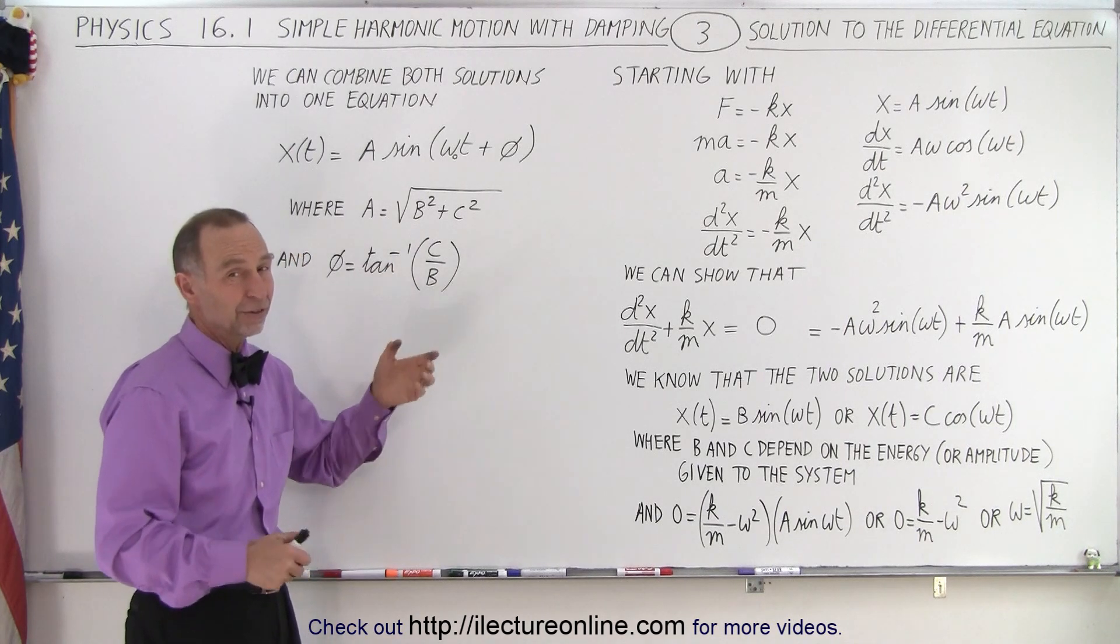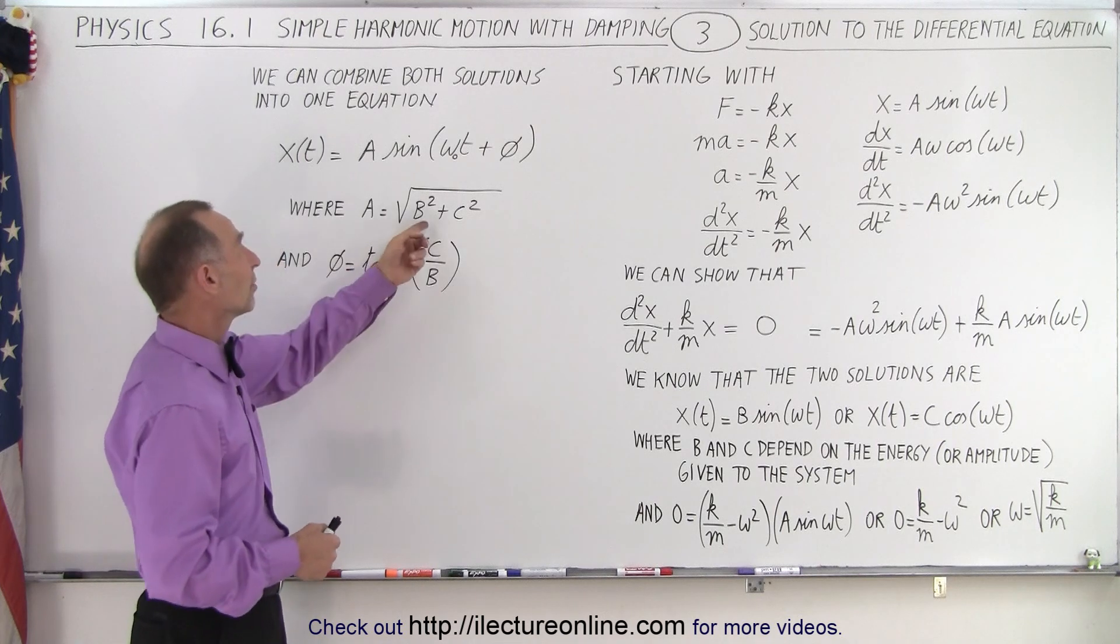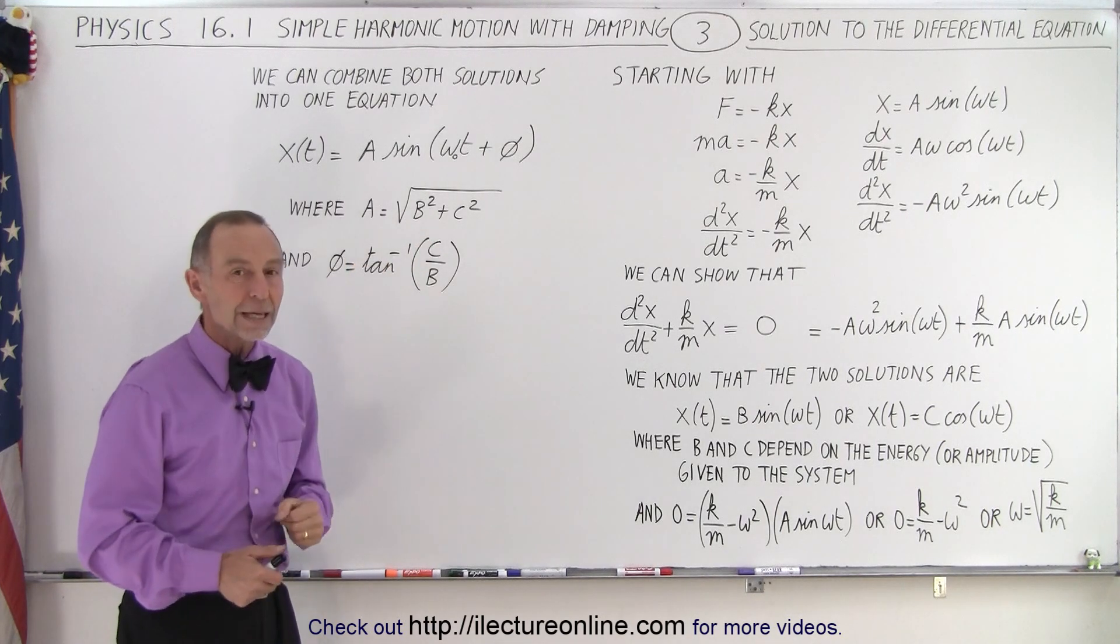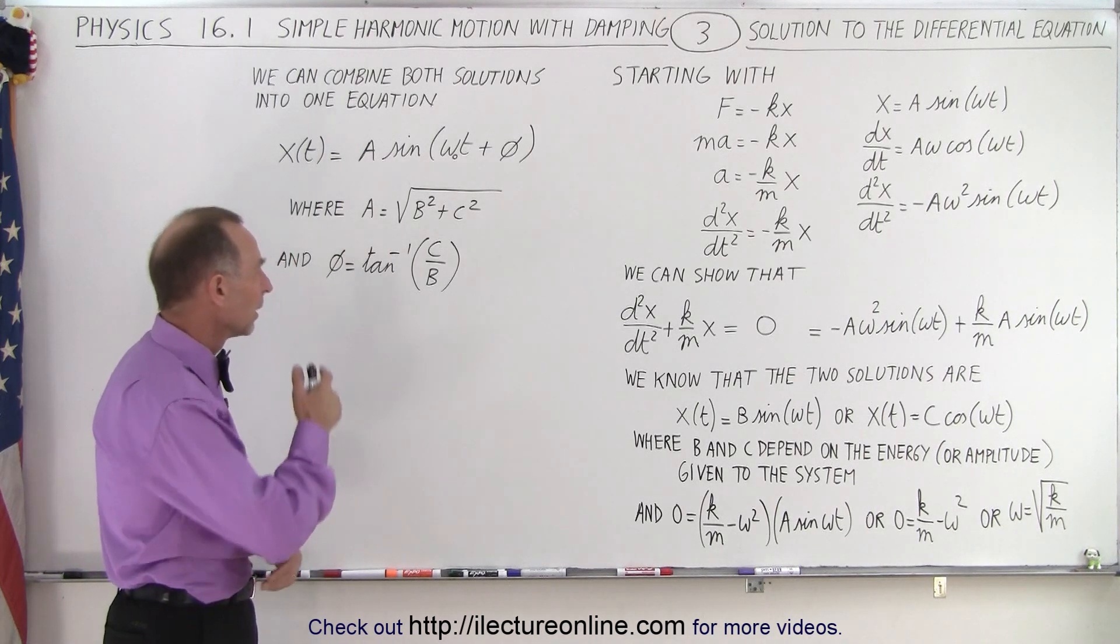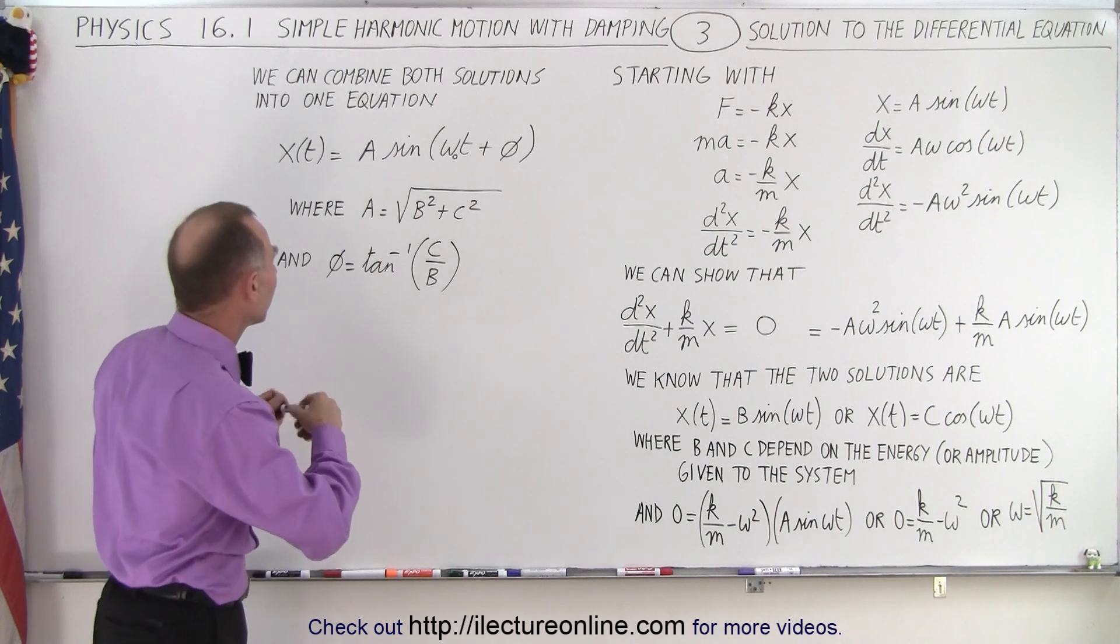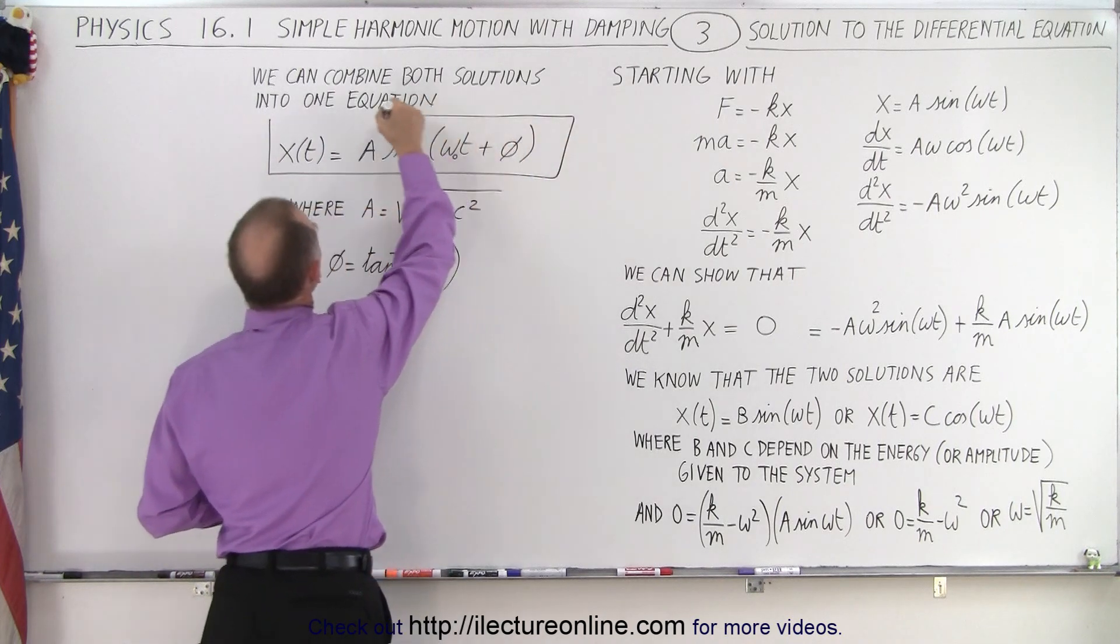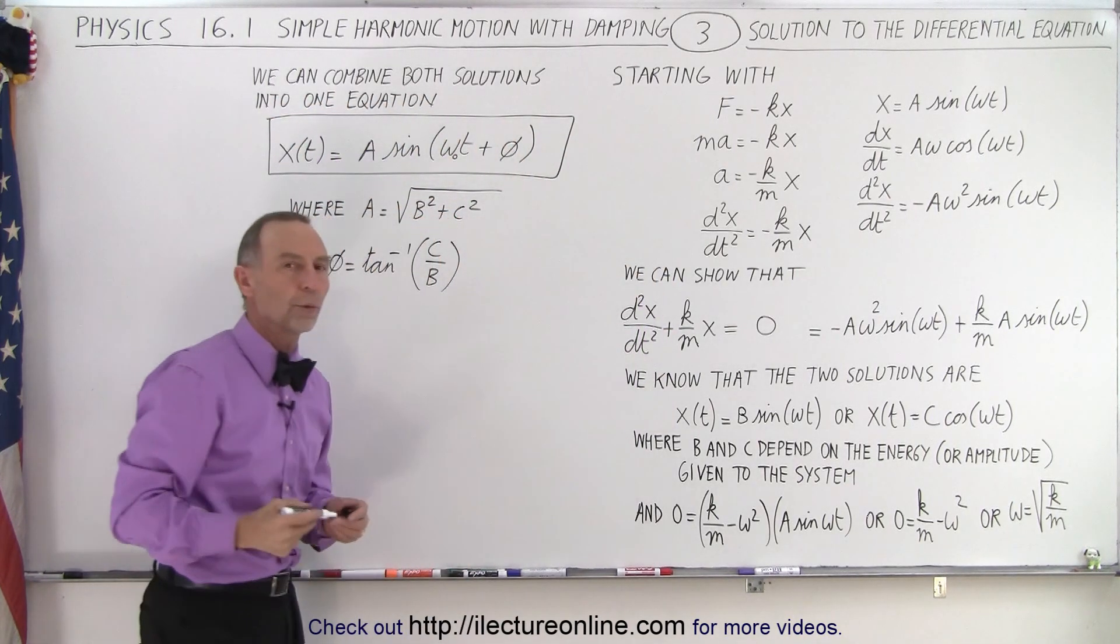Now, of course, if C and B are the same value, then the phase angle is 45 degrees, and if B and C are the same value, then of course we have the square root of 2 times B for the amplitude of A or the square root of 2 times C. So this then would become what we'd call the general solution of our differential equation describing the oscillatory motion.